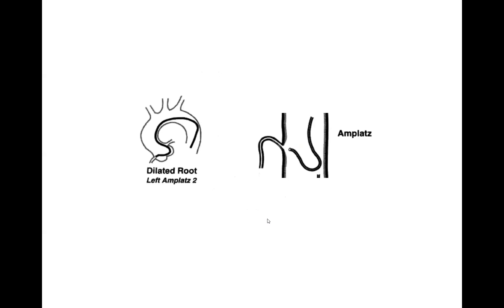Another characteristic of M-Plex Left is that most often, because of its size, it tends to point upward — not always, but typically tends to point upward, especially in a small aorta.